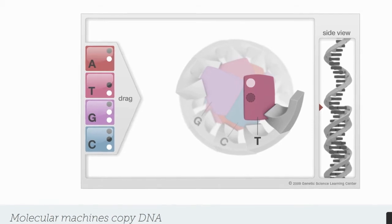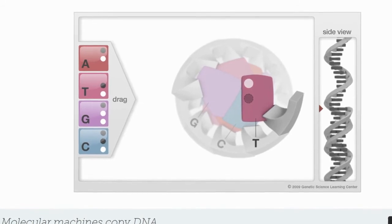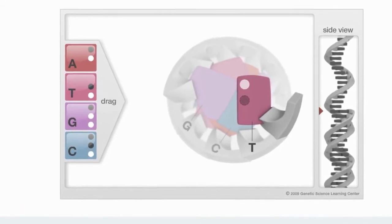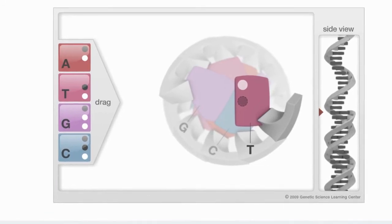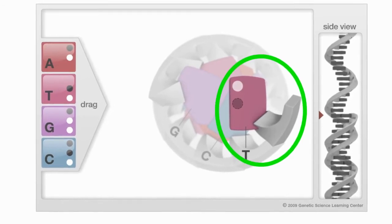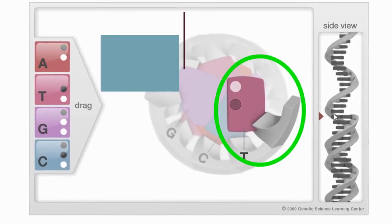You can see a T, which is the abbreviation for the nitrogen base called thymine. Attached to the lower right side of the T is a gray piece that looks like a three-dimensional V. This piece represents a sugar and a phosphate. The thymine, sugar, and phosphate together make up what is called a nucleotide.